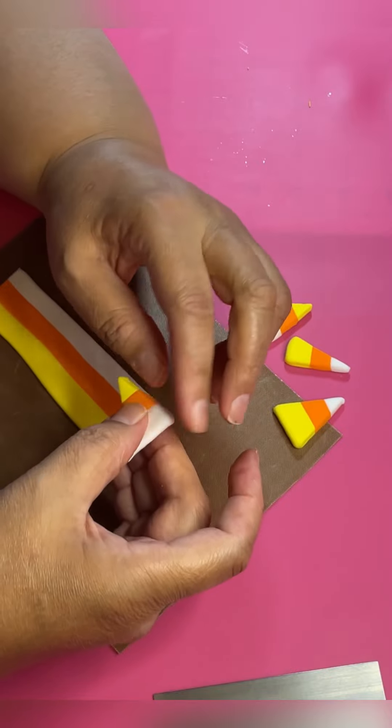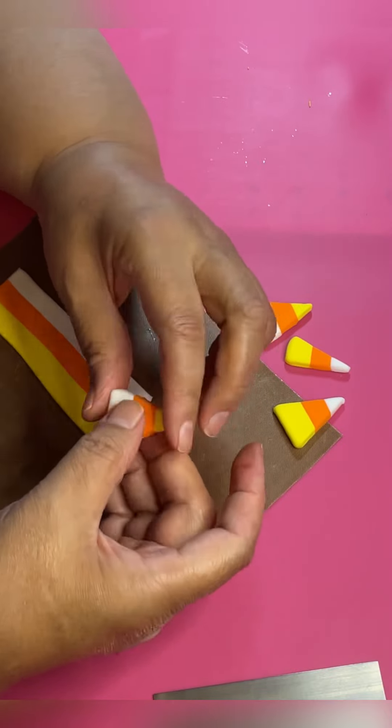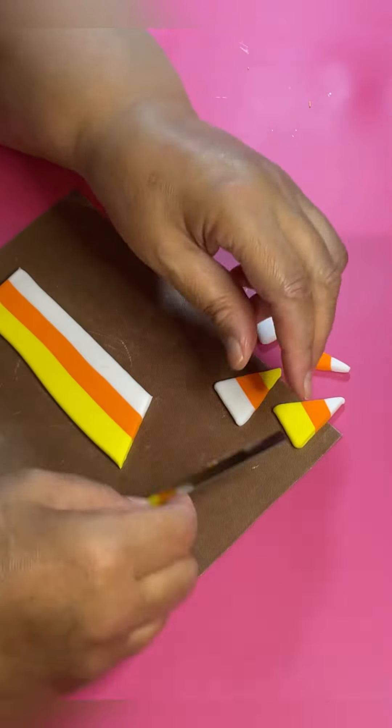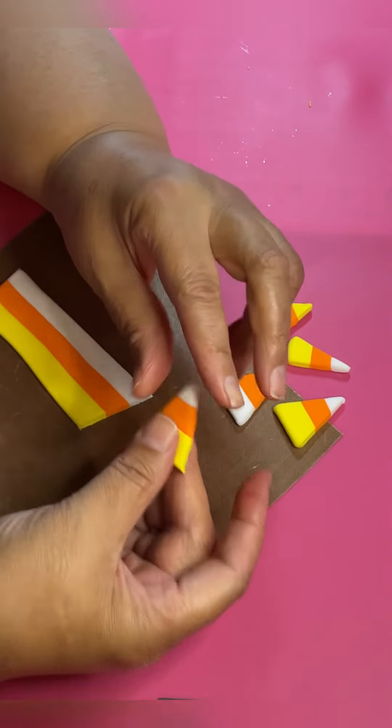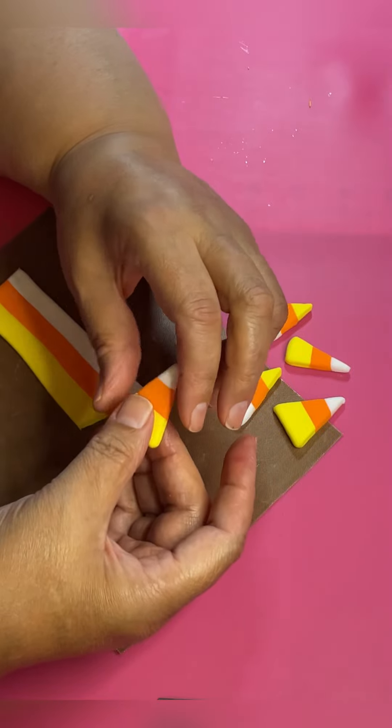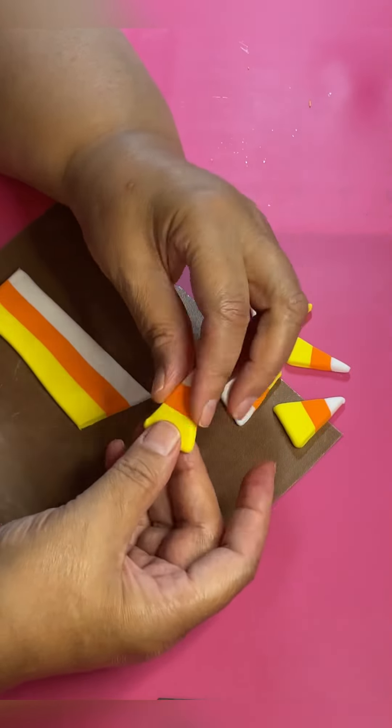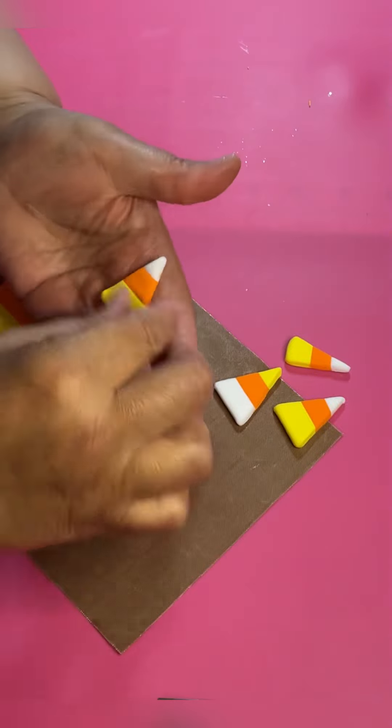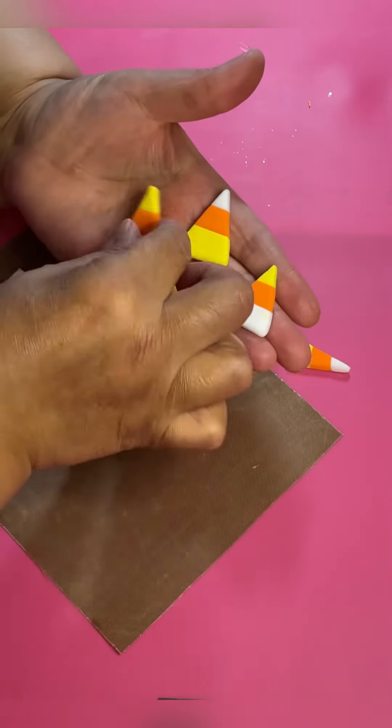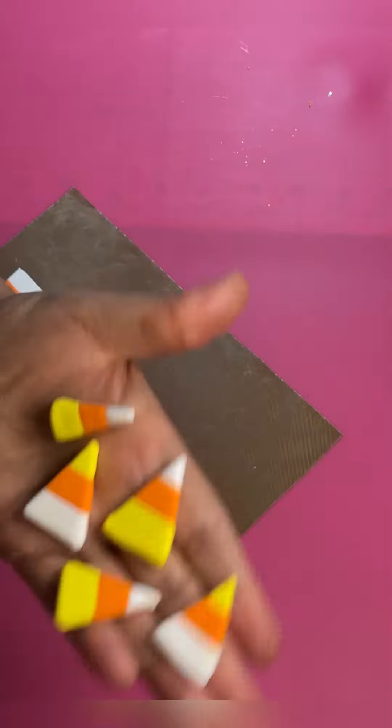Now some of these candy corns are not going to be in the candy corn order color, and that's okay. Nobody's really going to pay attention to that, only people that are really serious about their candy corn. But this is the right order right here: white, orange, yellow. But when you slice it the other way, you're going to get yellow on top, and then orange and white. But that's okay, don't worry about that too much. It is what it is.